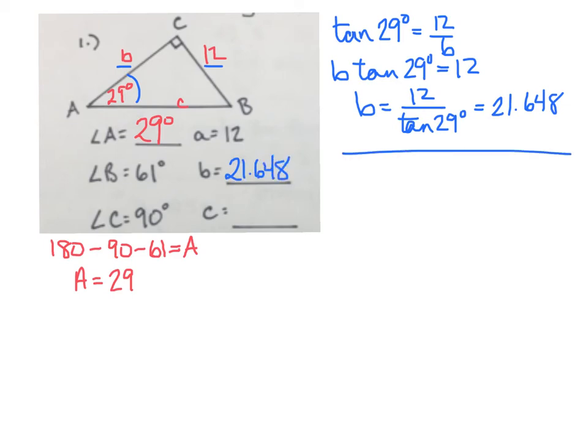Now, this is a right triangle. One of the first things you ever learned about right triangles was the Pythagorean theorem, where a² + b² = c². A is 12, so I'm just going to plug that in, 12². B is 21.648, so we'll square that. And we should get that to equal c².